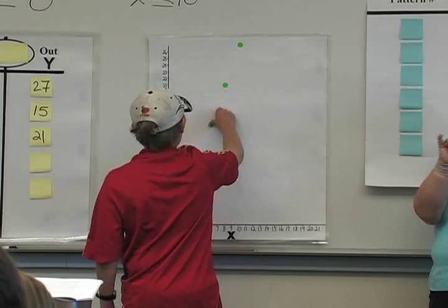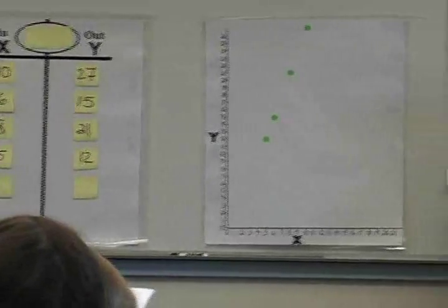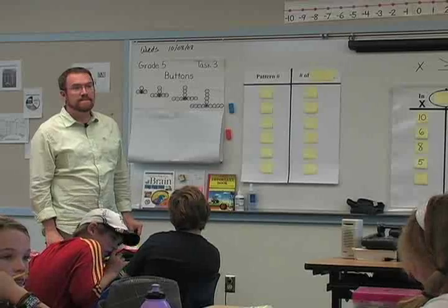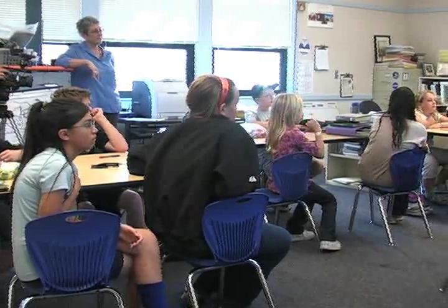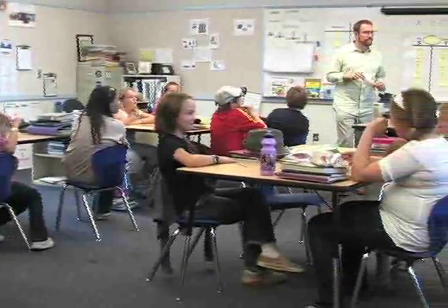Now the teacher asks who thinks they have a y value that will work with the rule. Zach offers 12. Someone comes up to plot the point. The teacher then asks for a show of thumbs — thumbs up if you know the rule, thumbs down if you don't, thumbs in the middle if you're almost there. Griffin says he has an output number, suggesting he thinks he knows the rule. The teacher decides to do one more point — Griffin will give a y value, and the x must still be between 0 and 10.